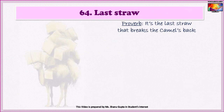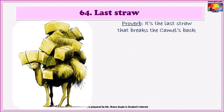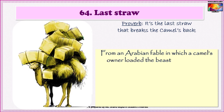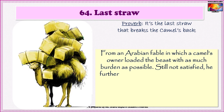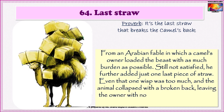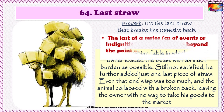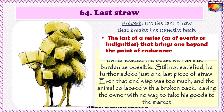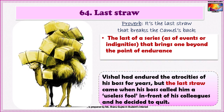Our next idiom is 'The last straw,' also used in the proverb 'It is the last straw that breaks the camel's back.' The expression originates from an Arabian fable in which a camel's owner loaded the beast with as much burden as possible, then further added just one last piece of straw — even that one wisp was too much and the animal collapsed with a broken back. So the phrase implies the last in a series of events or indignities that brings one beyond the point of endurance or patience. An example: 'Vishal had endured the atrocities of his boss for years, but the last straw came when his boss called him a useless fool in front of his colleagues, and he decided to quit.'